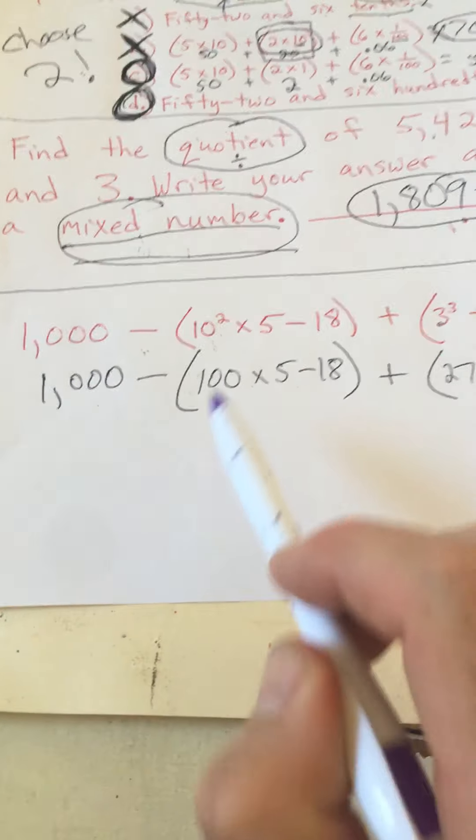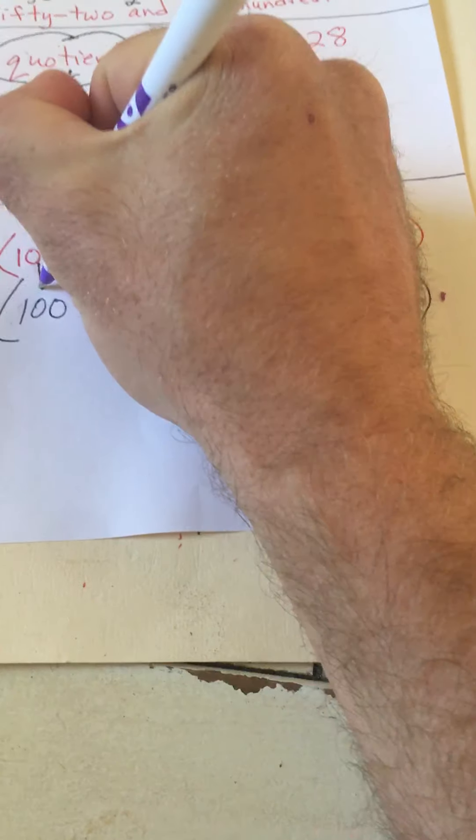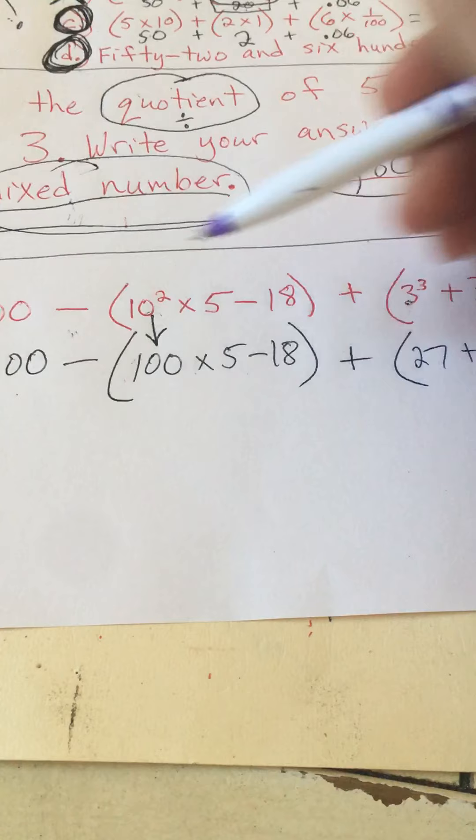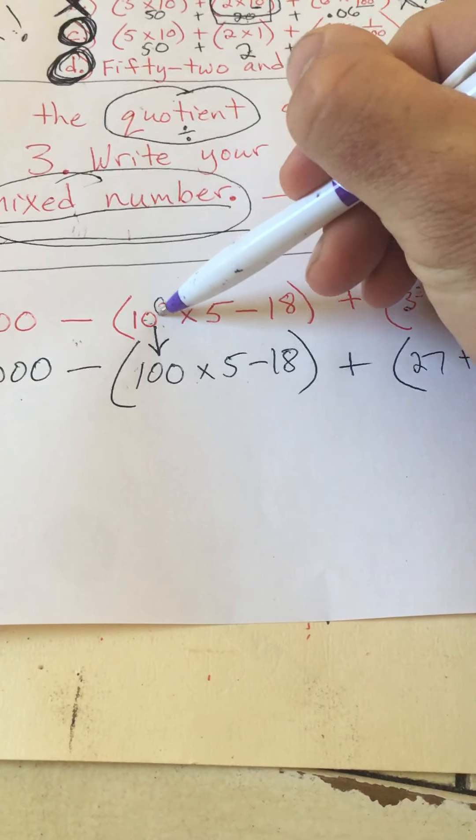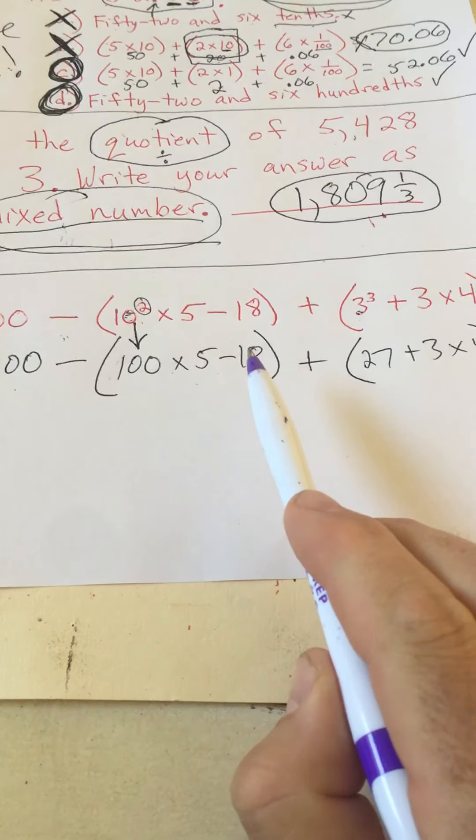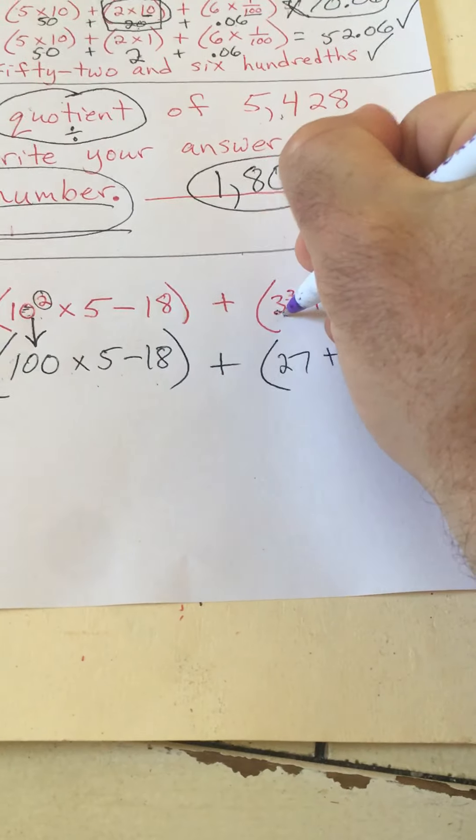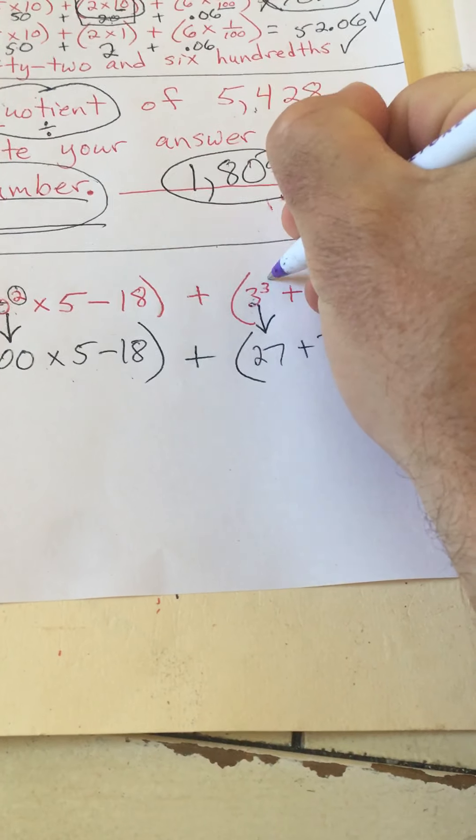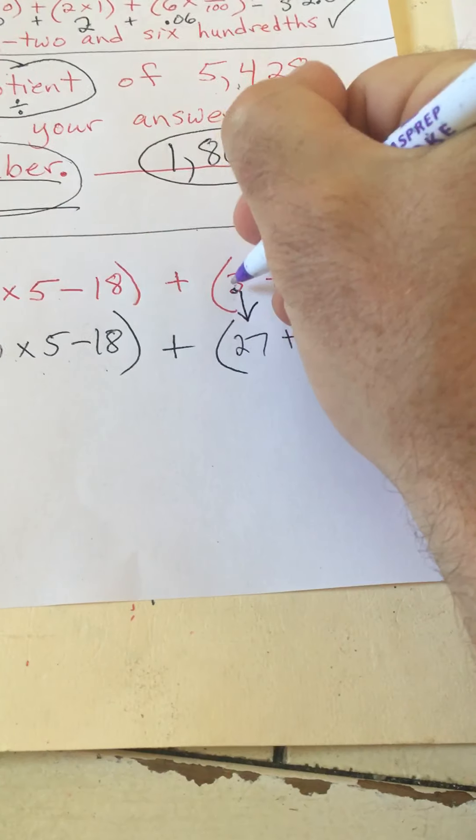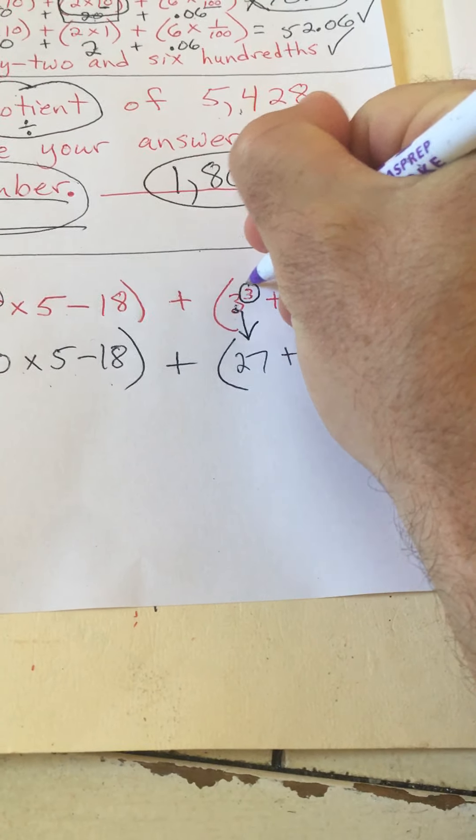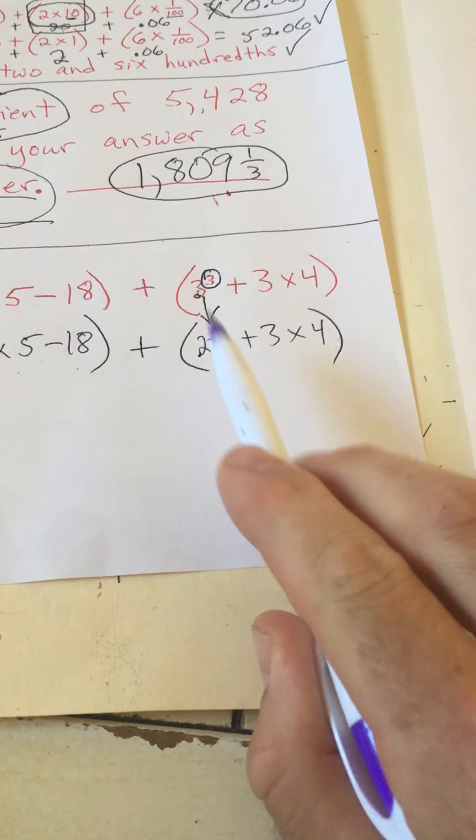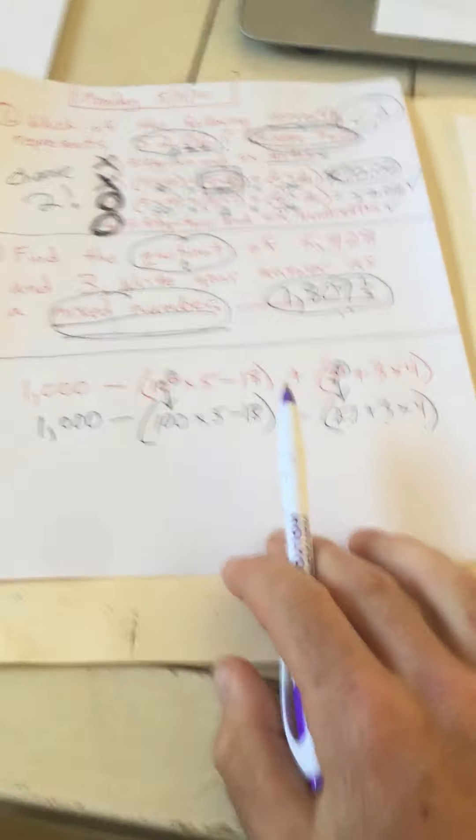So we're not going to do the subtraction yet. I just wrote 1,000 minus. We're going to do these exponents. 10 to the second power is really 10 times 10. It's 10 times itself twice. It's not 10 times 2. So 10 times 10 is 100. Then I just rewrote the rest. Times 5 minus 18 plus, and let's do this exponent. 3 to the third power is 3 times 3, which is 9, times 3 again is 27. You do 3 times itself 3 times. 3 times 3 times 3, which is 3 times 3 is 9, times 3 is 27. Then I just rewrote the rest. Plus 3 times 4.